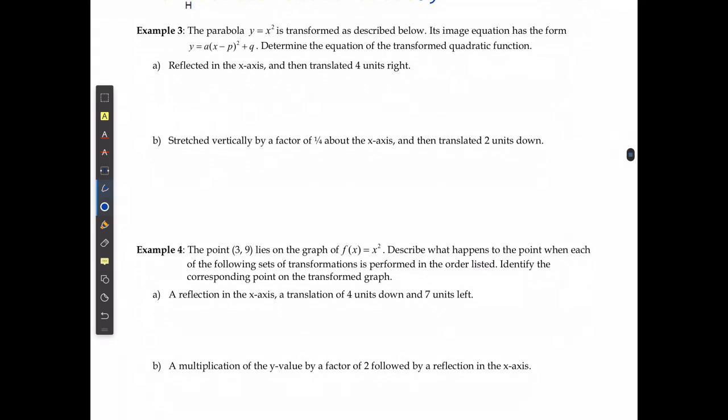For Example 3, the parabola y equals x squared is transformed as described below. Its image equation has a form of y equals a times the quantity x minus p squared plus q. So first thing, reflected in the x-axis means that a is negative.